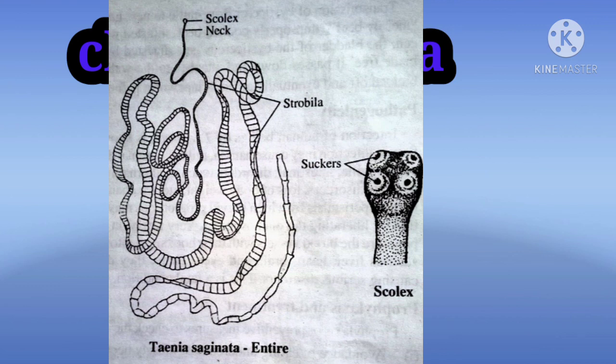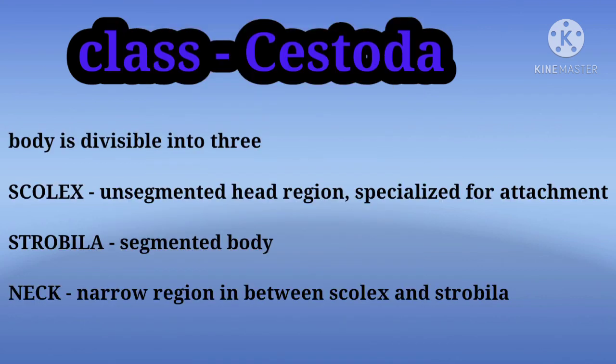The morphological features of Taenia: the body is divisible into three parts. The first is the scolex, which is the head, specialized for attachment. The second is the neck, which is a narrow region between the scolex and the strobila. The third is the strobila, which is the segmented body region.